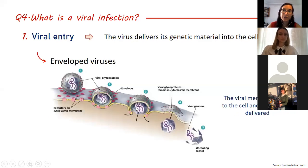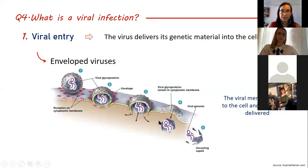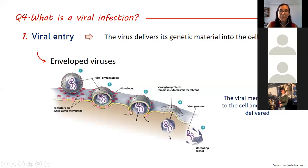In the case of envelope viruses, the whole capsid enters the cell because envelope viruses have a lipid envelope. They recognize receptors on the cell surface, then fuse their membrane to the membrane of the cell and release the capsid inside. The viral entry doesn't finish until the genetic material of the virus is free inside the cell.